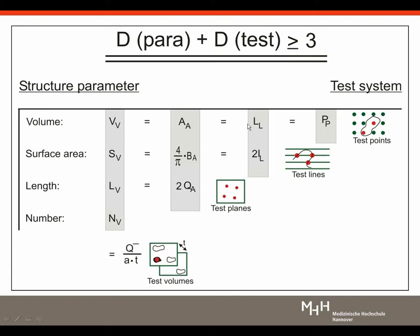The fundamental relationship tells us that the dimension of the probe plus the dimension of the parameter must equal at least three. For the three-dimensional parameter volume, we use zero-dimensional test points — points feel volume. For the two-dimensional parameter surface area, we use one-dimensional test lines — lines feel surface. For the one-dimensional parameter length, we use two-dimensional test planes — planes feel length. For the zero-dimensional parameter number, we need three-dimensional test volumes, created using two physical sections from one tissue block in a method called the dissector principle — dissectors feel number.